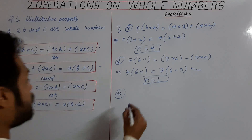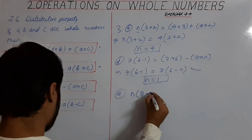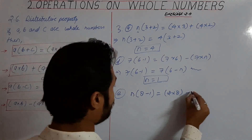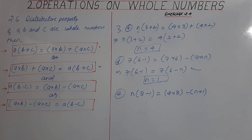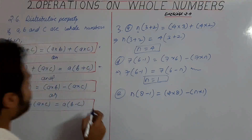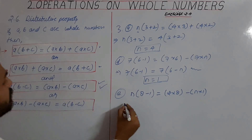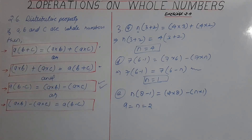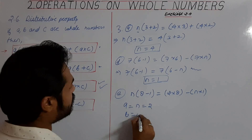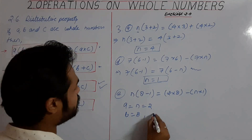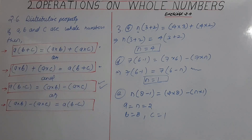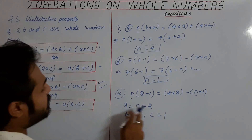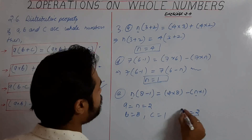Here we have to take 8 minus 1. The given statement is similar to the distributive property, where A equals n equals 2, B is 8, and C is 1. So here, comparing both sides, the values of n are equal to 8 and A is 2. The value of n is 2.